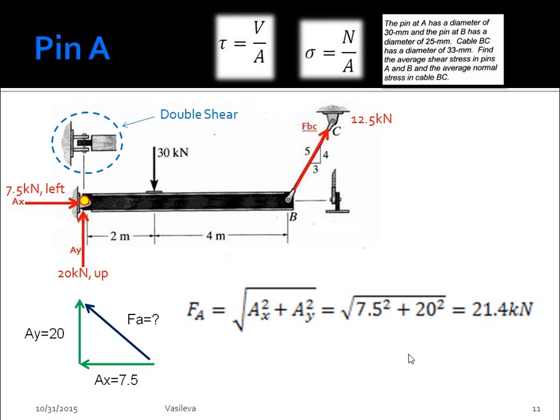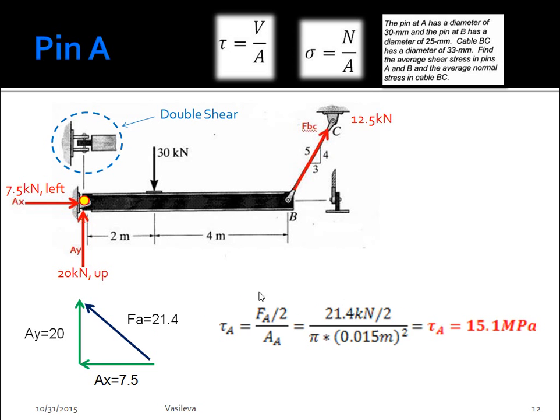So now that we've found the force and we know that this is actually double shear, we can just go to our formula and plug it all in. So because it's double shear, it's going to be FA divided by 2 over the area of pin A. So pretty straightforward calculation right there. So the shear stress at pin A is 15.1 megapascals. Now, if this was only a single shear, then we would get rid of this 2, so it would just be FA over the area of A. And that means that our magnitude would actually be twice this. So just know the difference between double and single shear. And I think that's an important concept to understand.